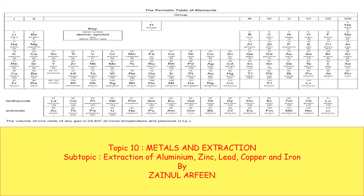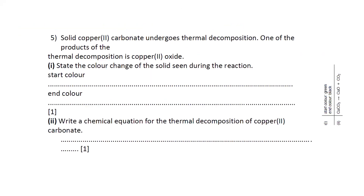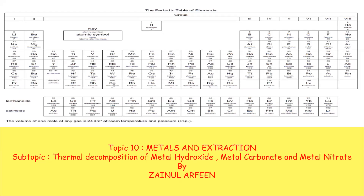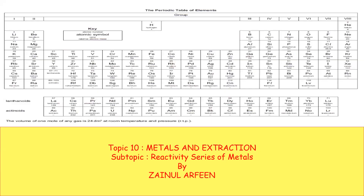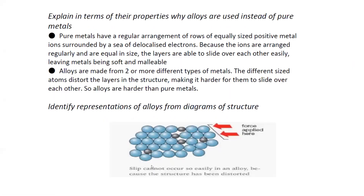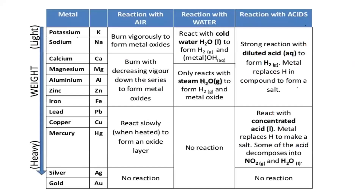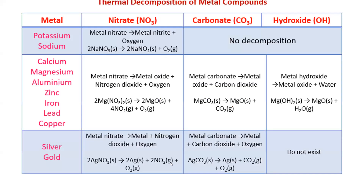That concludes the section on thermal decomposition. In the next session we will cover extraction — how we can obtain these metals from their compounds. Today we started Topic 10 on metals, discussing properties of metals and their reactions with acid, alkali, and water.